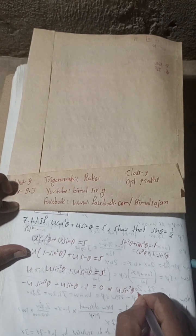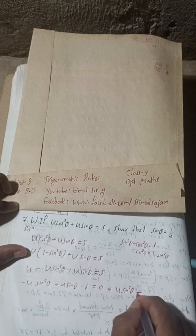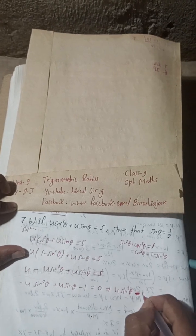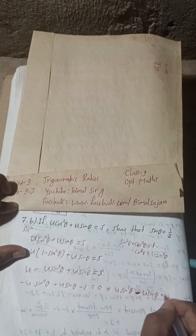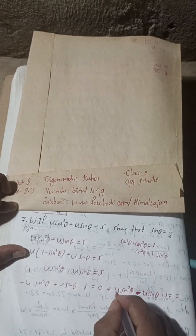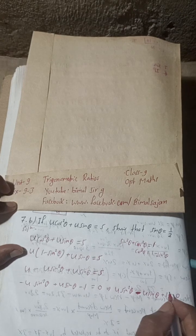Taking minus common, the minus becomes plus, so: 4sin²θ - 4sinθ + 1 = 0. If we divide by zero, this will be zero only.